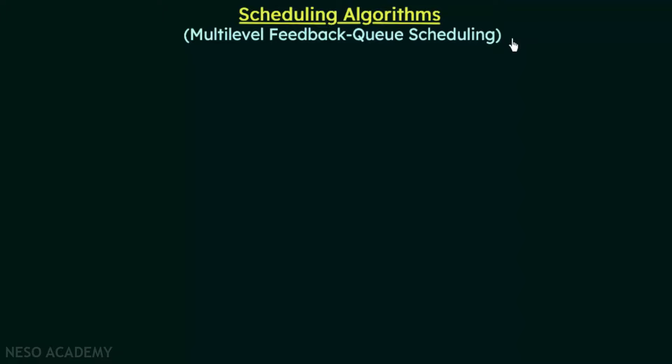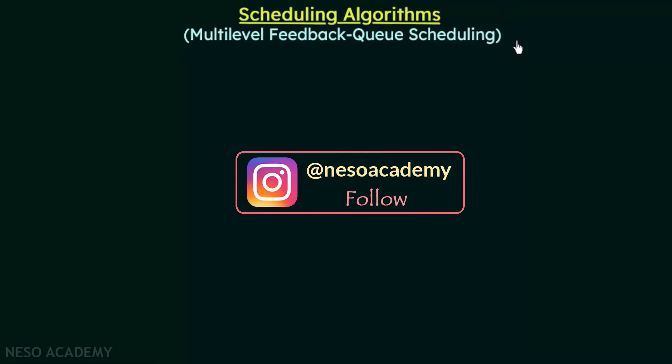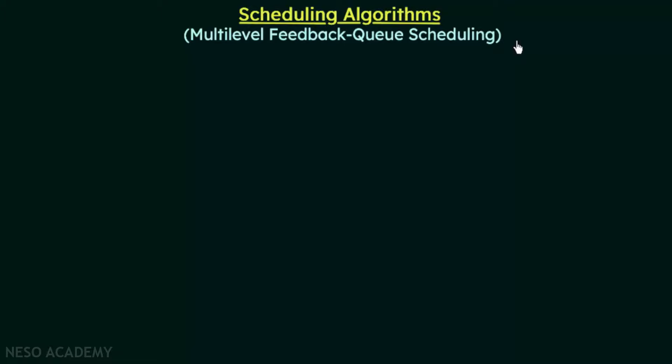In this lecture, we'll be discussing the next scheduling algorithm, which is the multi-level feedback queue scheduling. In the previous lecture we discussed multi-level queue scheduling and saw how it works. There, processes were classified into different groups assigned to different queues, and once a process was assigned to a particular queue, it was always assigned to that queue — it would not be moved to another queue.